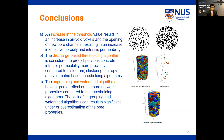In conclusion, there are three main outputs. First, an increase in threshold value always results in an increase of air-void voxels and opening of new pore channels, resulting in increased effective porosity and intrinsic permeability. Second, the discharge-based algorithm is capable of predicting results more accurately compared to existing global thresholding algorithms like histogram, clustering, entropy, and volumetric. Third and most importantly, the ungrouping and watershed algorithms have a greater effect on pore properties compared to thresholding algorithms. The appropriate set of digital image processing algorithms selected in this study will be used for further analysis to study the effect of pore network characteristics on permeability and skid resistance, and these findings can contribute to future work on pavement mixture quality control.